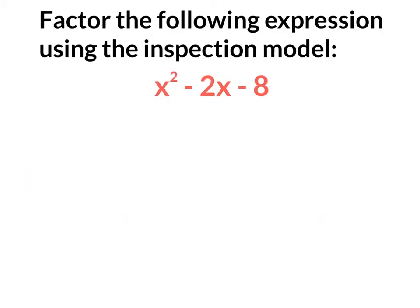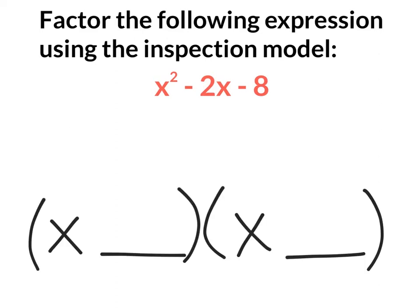The first example asks you to factor the following expression using the inspection model for the equation x squared minus 2x minus 8. To begin, we're asked to factor, so we're going to have our final answer in a binomial form. We're going to start by finding two numbers that multiply to give us negative 8 and add to give negative 2.